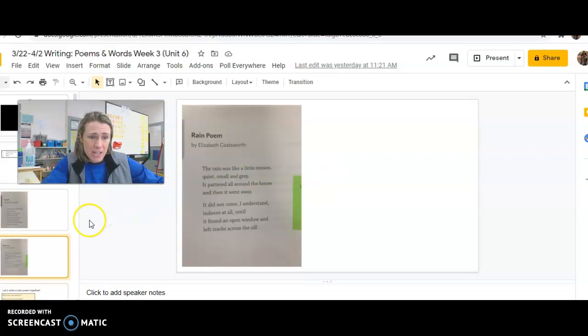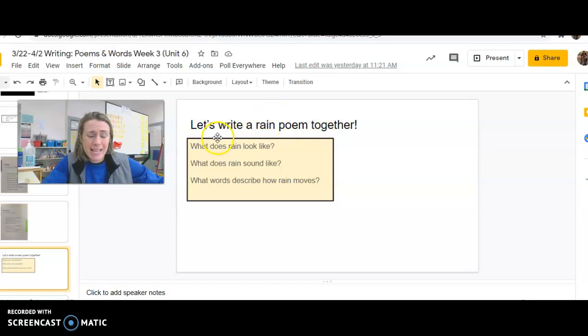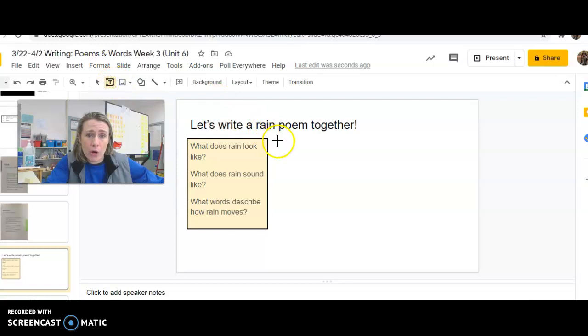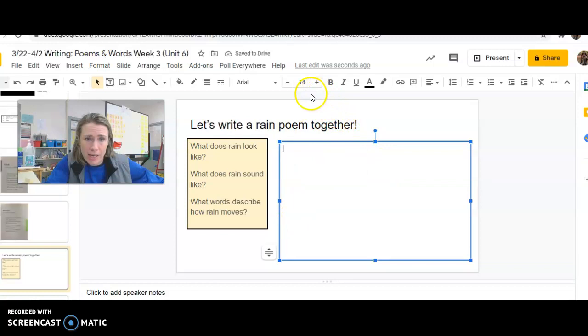So here's what we're going to do. It says, let's write a rain poem together. We can ask ourselves, what does rain look like? What does rain sound like? And what words can we use to describe the rain? So I'm going to pretend that this, let me make this a little smaller here. And you should go grab your notebook, because we're going to start this poem together, but then you are going to finish it on your own. So you can actually copy what we write together right into your notebook. So over here is kind of like it's my little notebook page. Okay? All right.